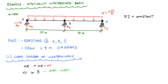The difference between the number of reactions and the number of equations tells us the degree of redundancy, or the degree of static indeterminacy. Our structure is statically indeterminate to the first degree, which means it has one redundant. What the redundant means is that you can remove one of these reactions and the structure would probably still be stable. For instance, I could remove C_Y, B_Y, or A_Y and it would be stable.